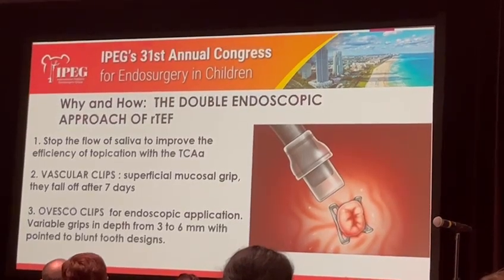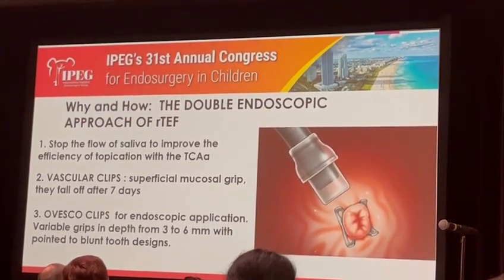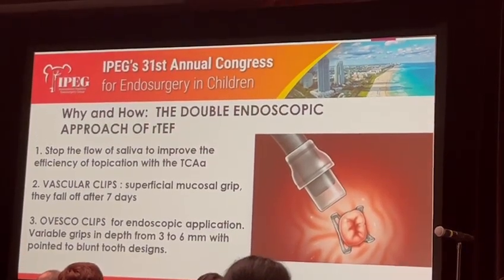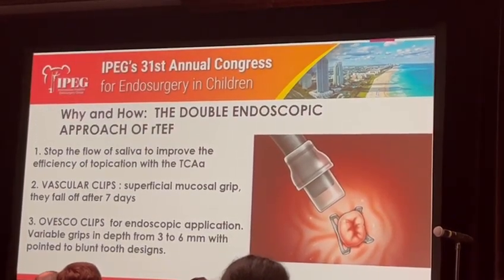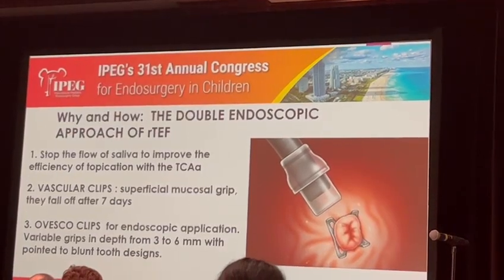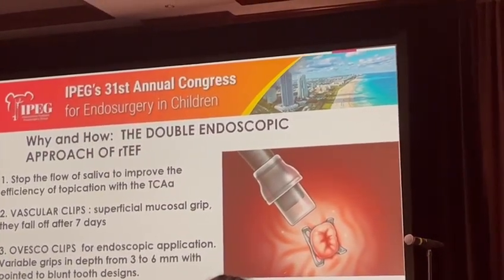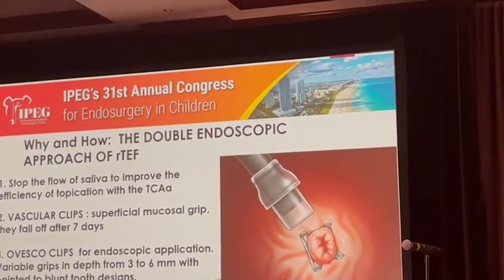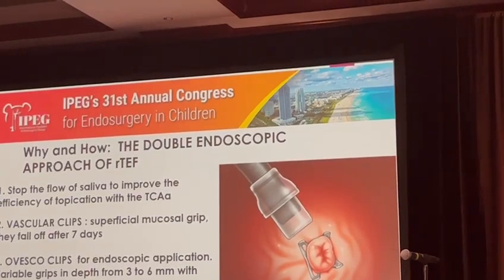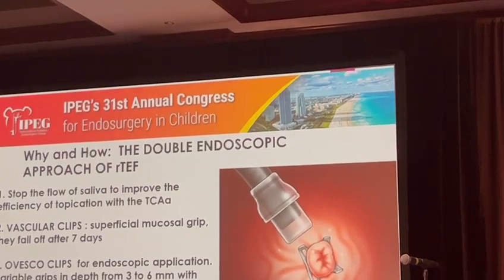We have two types of clips: the vascular clips that cause superficial mucosal grip — they fall off after seven days — and the Ovesco clips for endoscopic application with variable grips, which are indeed three to six millimeters with pointed and blunt tooth design.